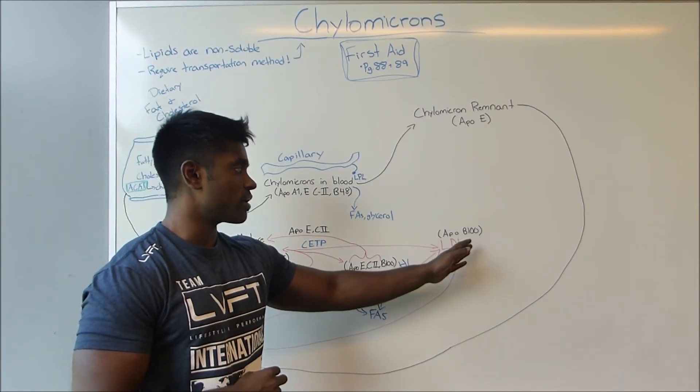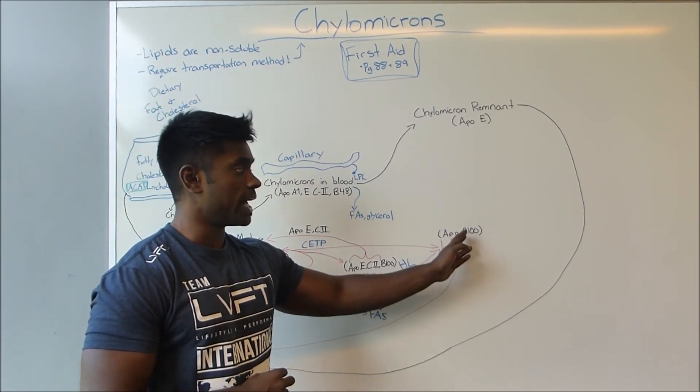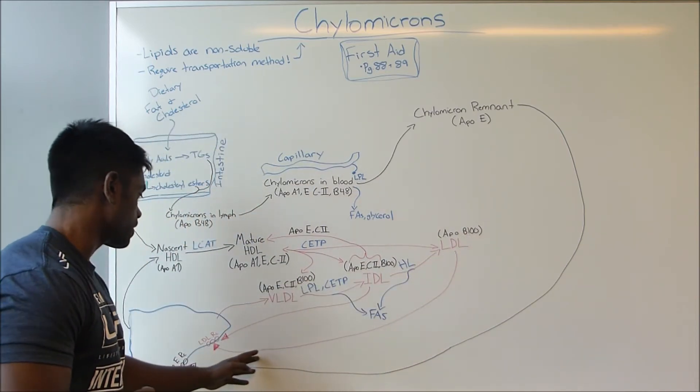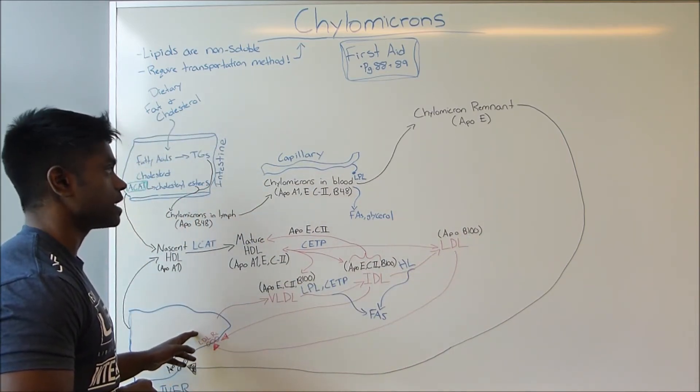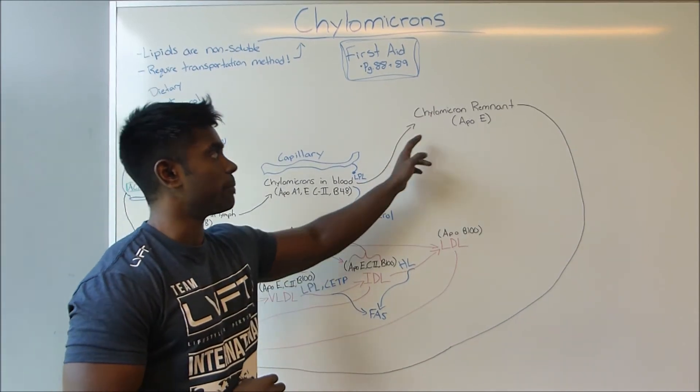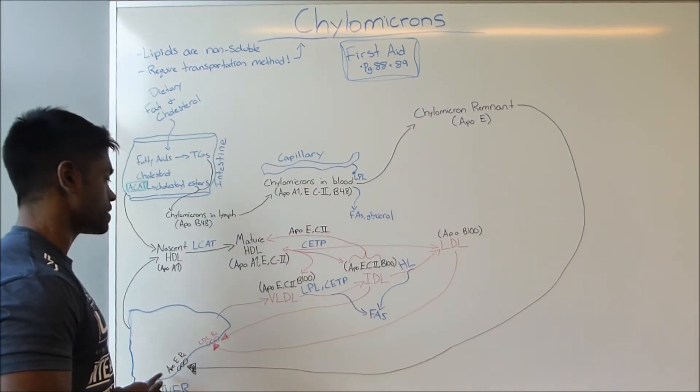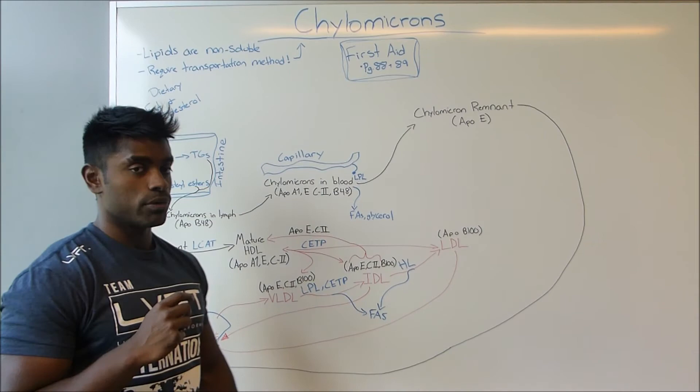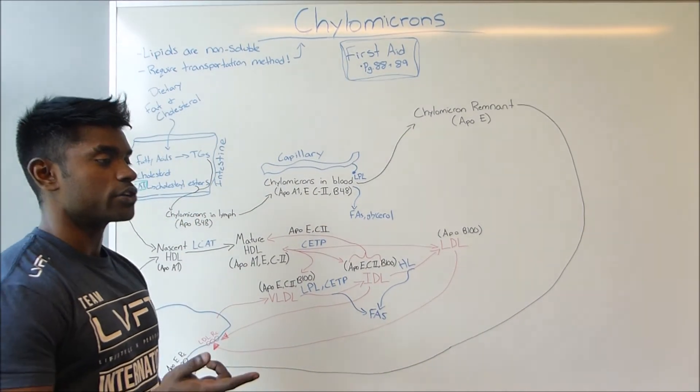But if this does not occur, since it contains a protein ApoB100, it's going to enter the capillary via the LDL receptor, unlike chylomicrons which enter through the ApoE receptor.